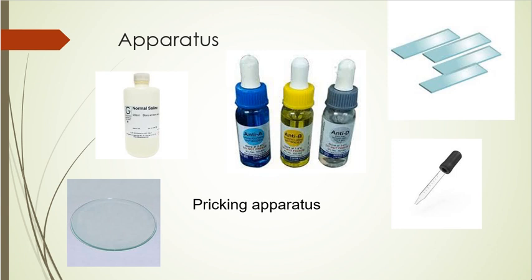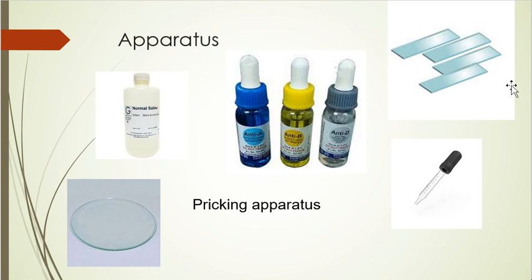For apparatus, we need anti-A and anti-B antisera, as well as anti-D. We need four slides, labeled A, B, D, and one for control. Some labs use a stick or toothpick for mixing, and some use pre-prepared blood group slides with wells. We also need a dropper, normal saline for suspension, a watch glass, and pricking apparatus to prick the finger.